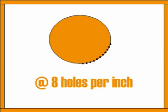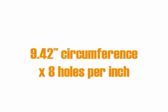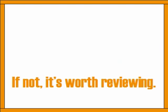We said there are eight holes per inch because we're working with a one-eighth inch drill bit. So we'll need just over 75 holes — 75.36 to be precise — at a 9.42-inch circumference times eight holes per inch. Does the calculation make sense? We're using pi to find the circumference, then multiplying by eight holes per inch to get the total number of holes needed to create the three-inch diameter circle. If not, it's worth reviewing — fill out your review sheets and work through a few of these.